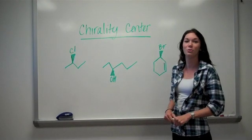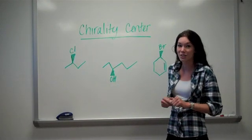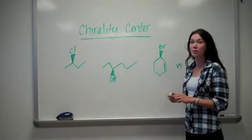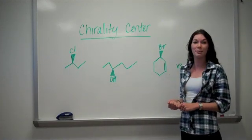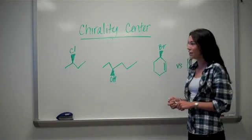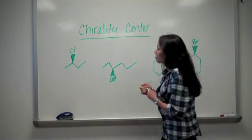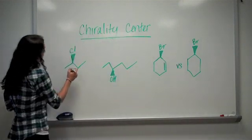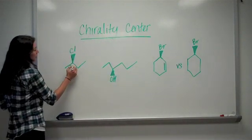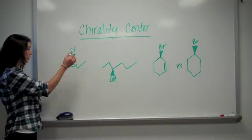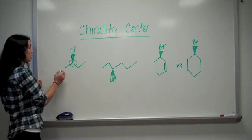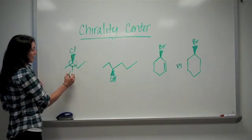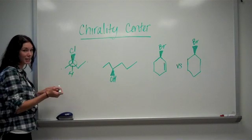Next, we're going to be explaining what chirality centers are. A chiral center is a carbon with four different atoms attached to it. For example, in this molecule, the chiral center would be right here. This carbon is attached to a chlorine, a methyl group, an ethyl group, and a hydrogen.